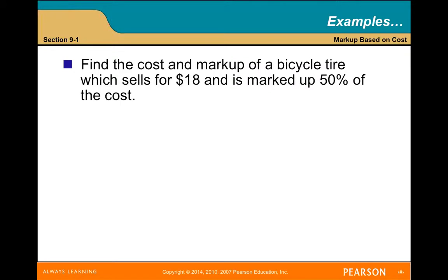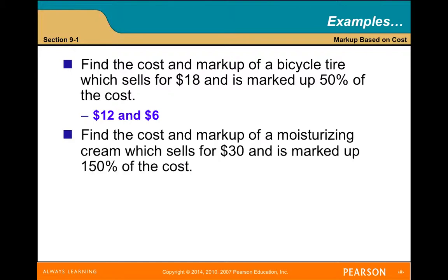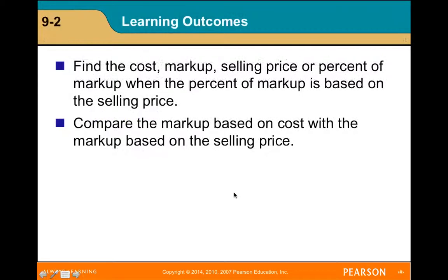Find the cost and markup of a bicycle tire which sells for $18 and is marked up 50% of the cost. The cost is $12.00. Find the cost and markup of a moisturizer and cream which sells for $30 and is marked up 150% of the cost — the cost is $12 and the markup is $18.